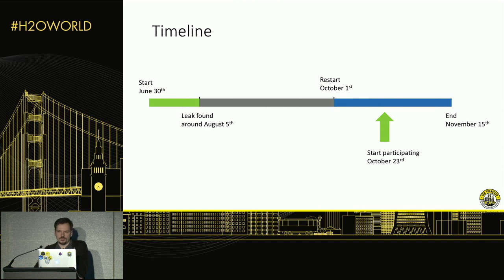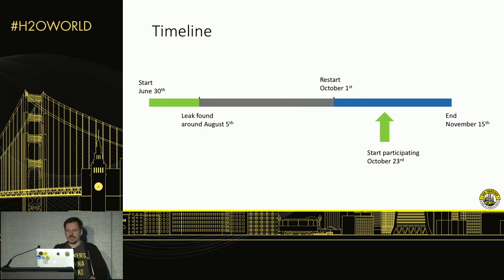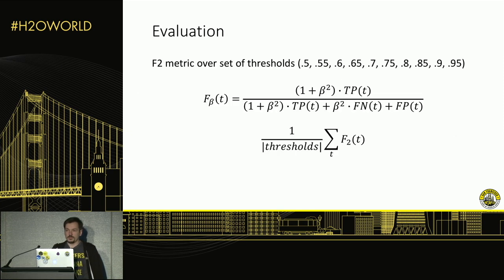It was a pretty long competition with an interesting history. Unfortunately, I joined kind of late, so I have no idea what actually happened. But I found out there was actually a leak found in the data when they first released it, so they had to restart the competition from scratch, combining the previous training and test data into the new training data and releasing additional test data. The evaluation metric was F2 score, averaged over a set of thresholds — basically able to identify how good a prediction is in terms of false negatives relative to true positives.